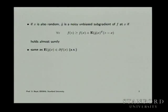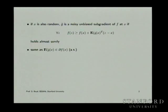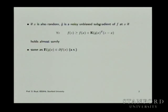If x is also random, then you say that g-tilde is a noisy unbiased subgradient if for all z, this inequality holds almost surely.